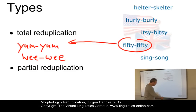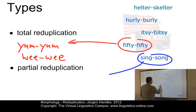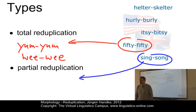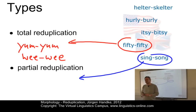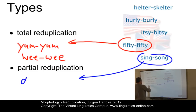Then we have partial reduplication, where not the entire base form is repeated, but only part of the base. The reduplicated part itself may involve some additional phonological changes. So we have sing-song or, for example, ding-dong.